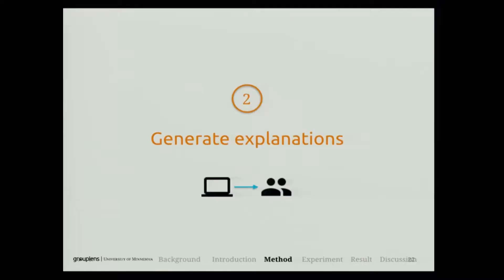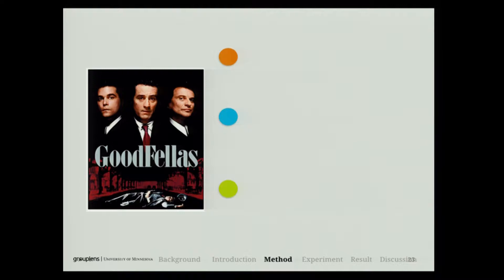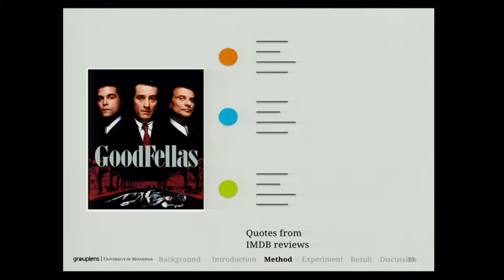In the second step, once we have the key topics of each item, we need to generate an explanation saying why, if you're interested in this aspect, we think this item is good. Similarly, we have a machine-generated output refined by the crowd. We index the IMDB reviews and for each given topic we search for candidate quotes that describe why this aspect of the movie is good. For each key topic aspect, we find six candidate quotes, then have the crowd take a look and aggregate them into the final explanation.